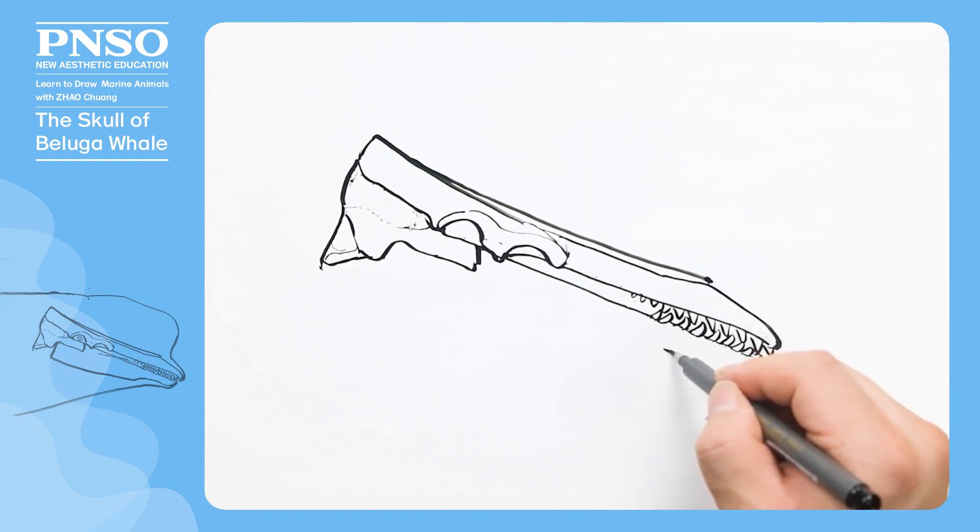Its lower jaw is relatively narrow in front and suddenly widens from the middle.